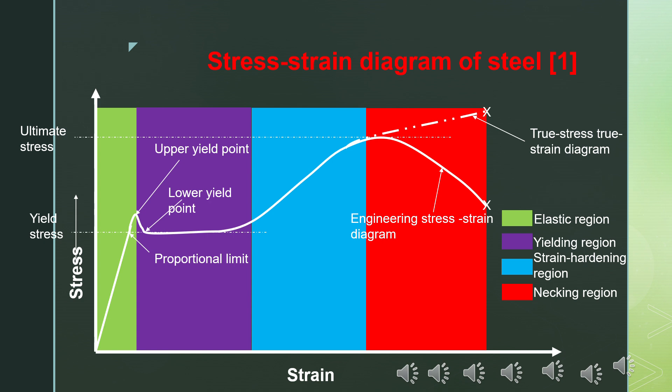Next comes the yield region. At the upper yield point, stress falls to a lower value — the lower yield point. The upper yield point varies from test to test for a given steel, but the lower yield point remains more or less constant. For analysis purposes, we generally consider the lower yield point as the yield point. Beyond it, for a range of strain, the stress remains approximately constant at the yield stress.